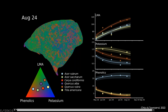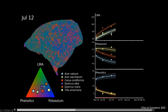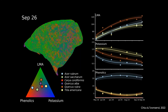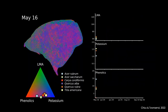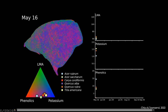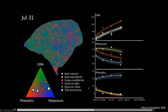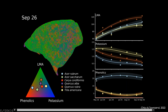In an animation, the different species become more distinct from each other as the growing season progresses. Each of these different species actually occupies a different trait niche space—different characteristics that allow them to coexist and take advantage of different resources. For example, Acer rubrum has much higher phenolics than any of the other species, and it increases in phenolics over the course of the growing season, whereas the other five species actually decrease in phenolics.